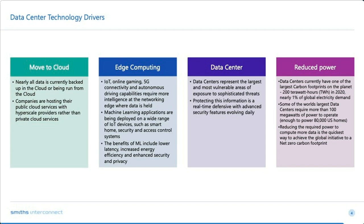Reducing power consumption in data centers is also critical. Data centers currently have one of the largest carbon footprints on the planet — 200 terawatt hours in 2020, which was nearly 1% of global electricity demand. Some of the world's largest data centers require more than 100 megawatts of power to operate — enough for 80,000 homes in the U.S. Reducing the required power to compute more data is the quickest way to achieve the global net-zero carbon footprint initiative, a KPI for most companies today.